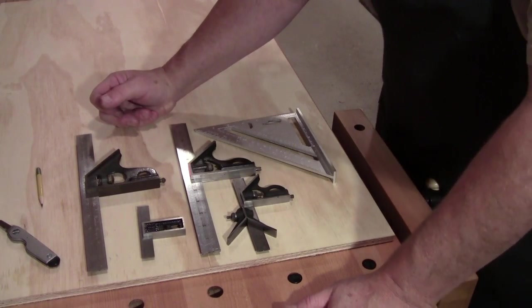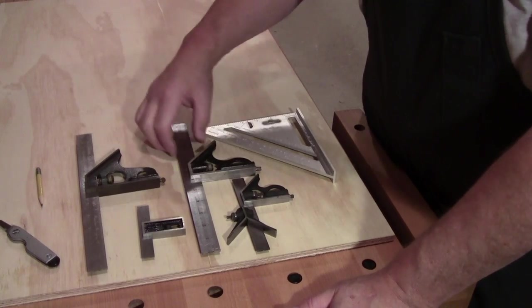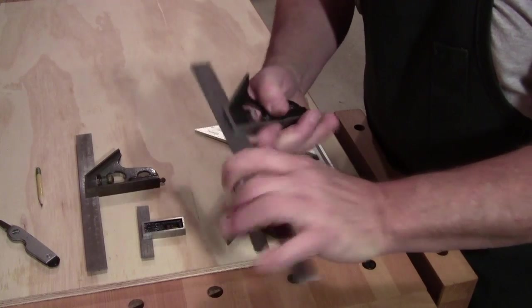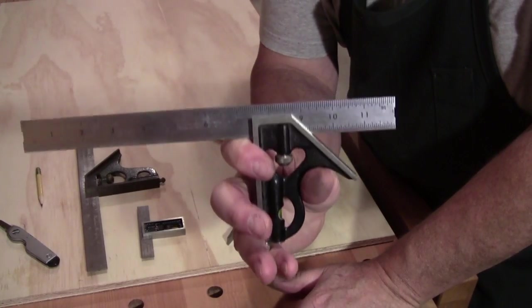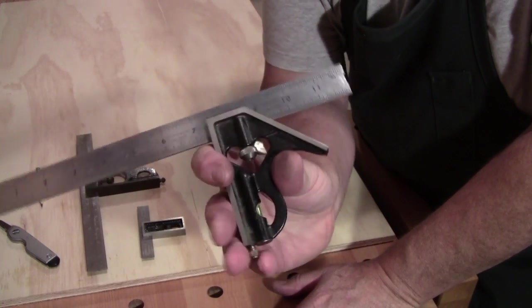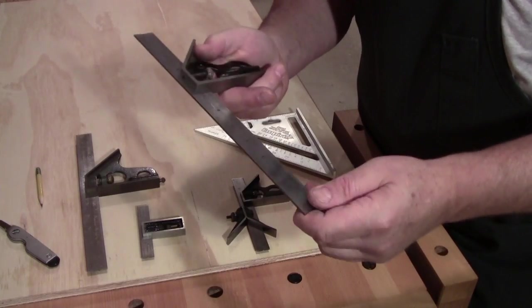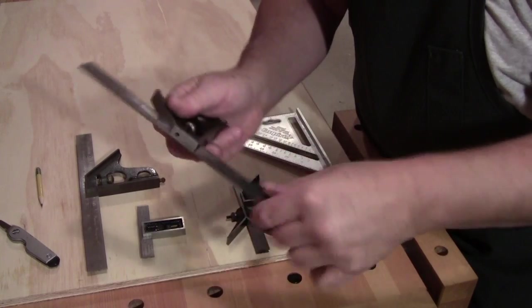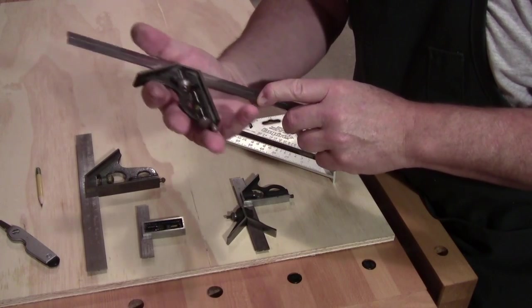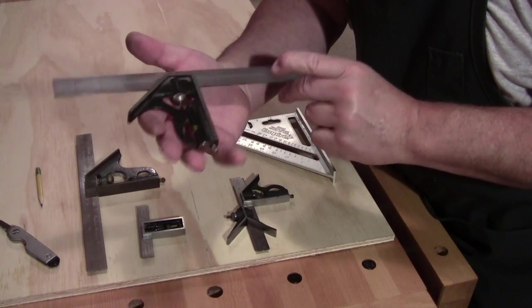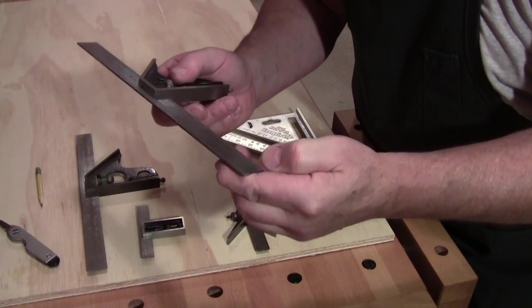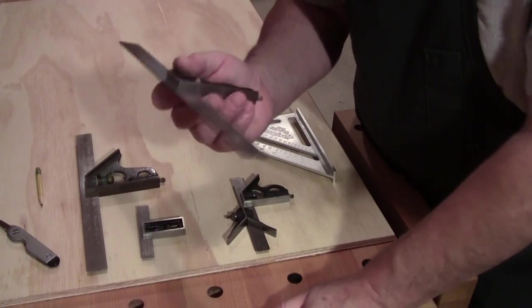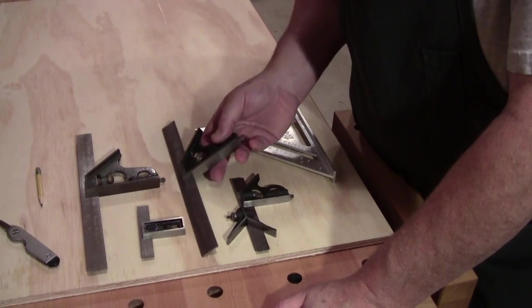Then I bought another one not too long ago on eBay. It is a Miller's Falls. I don't know if you can see the name on there, and it is very nicely made. I would say it was equivalent with the Staretts of its day, and this one has served me very well at my workbench for years.